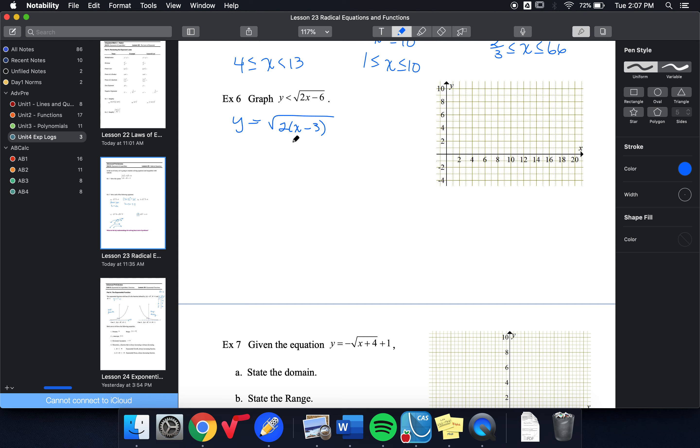So this is a square root graph where it's horizontally stretched. And remember, we're going to do that by taking our x values and dividing by 2, and then moved to the right 3.